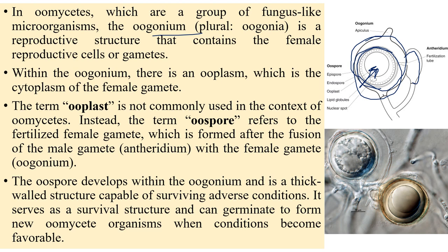The oospore is referred to as a fertilized structure formed by the fusion of both male and female gametes — male means antheridium, female means oogonium. The type of reproduction in Oomycota is oogamous, where male and female gametes come in contact and exchange of gametes takes place, resulting in fertilization and oospore production. Inside the oospore there is a small bubble-like structure called the ooplast, surrounded by thick layers. Now you understand what is oospore and what is ooplast.